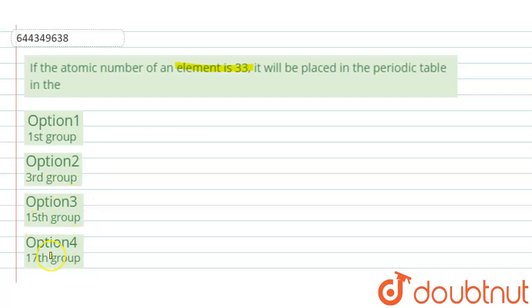15th group, or 17th group? First, we'll write the electronic configuration for atomic number 33.